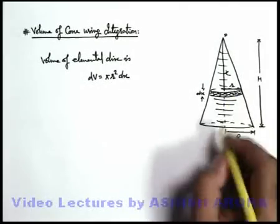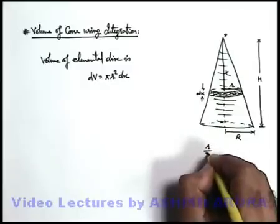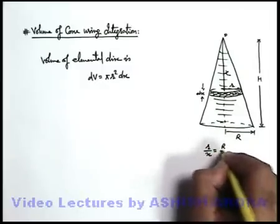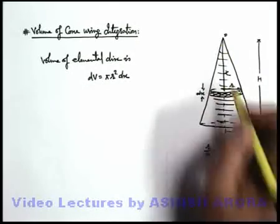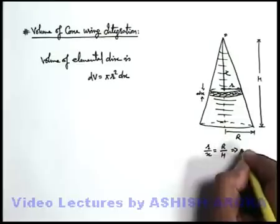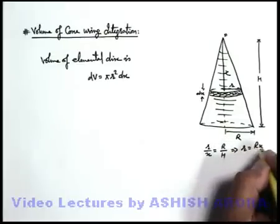By similarity of triangles we can use here: small r by x is equal to capital R by h, that is in this small triangle and in this bigger triangle. So from here we get small r is equal to Rx by h.